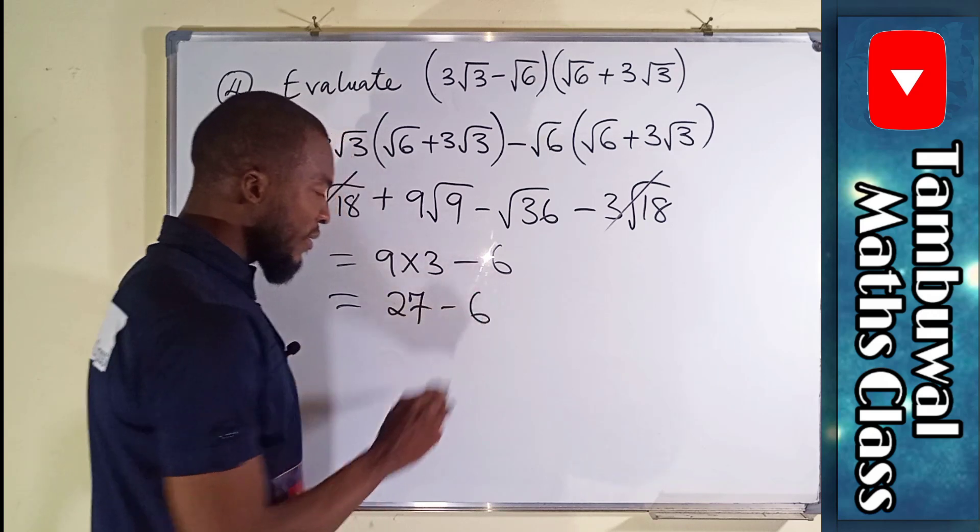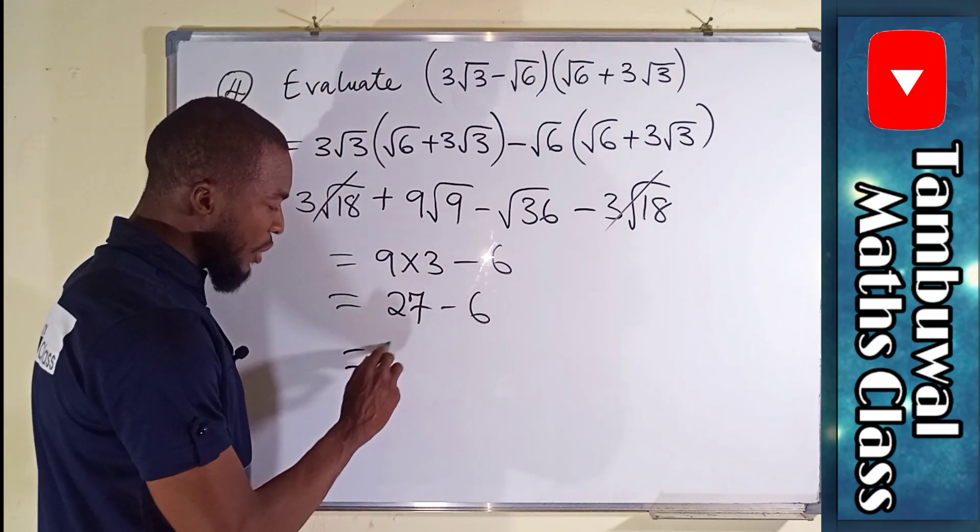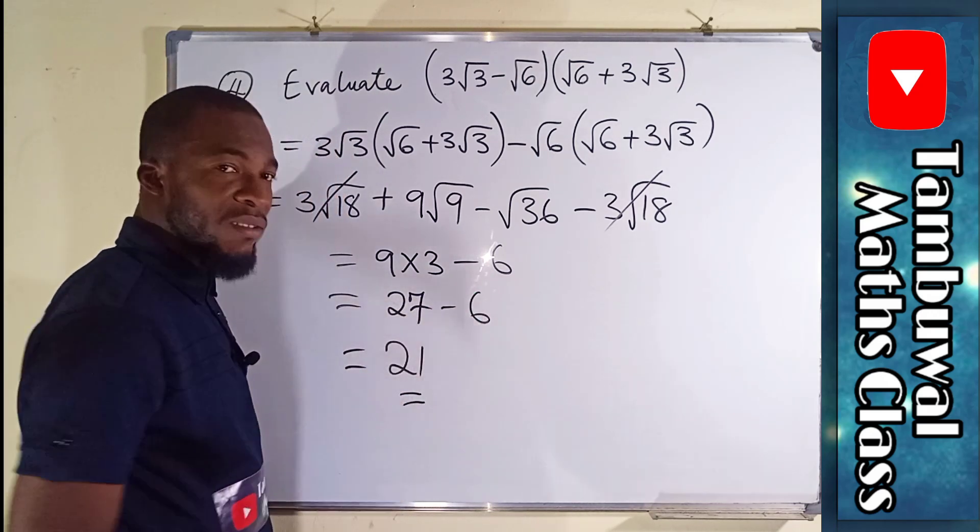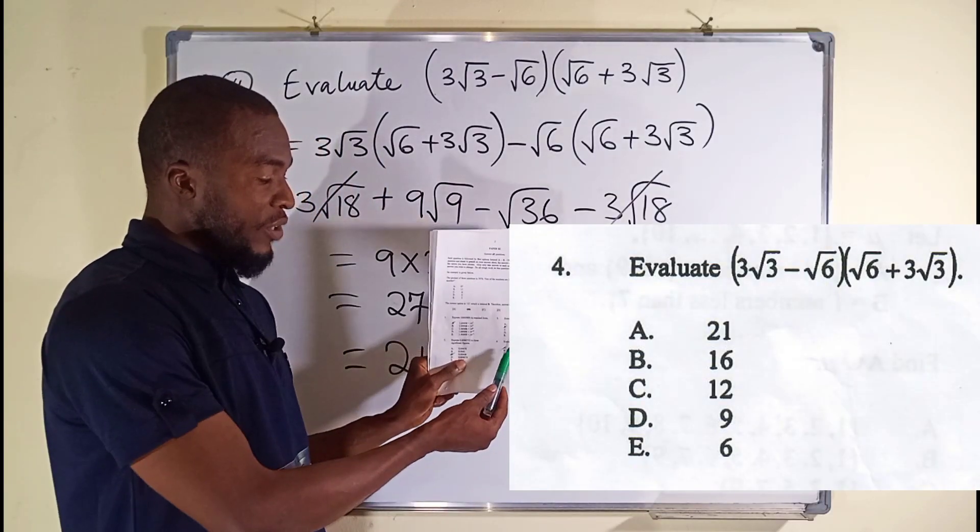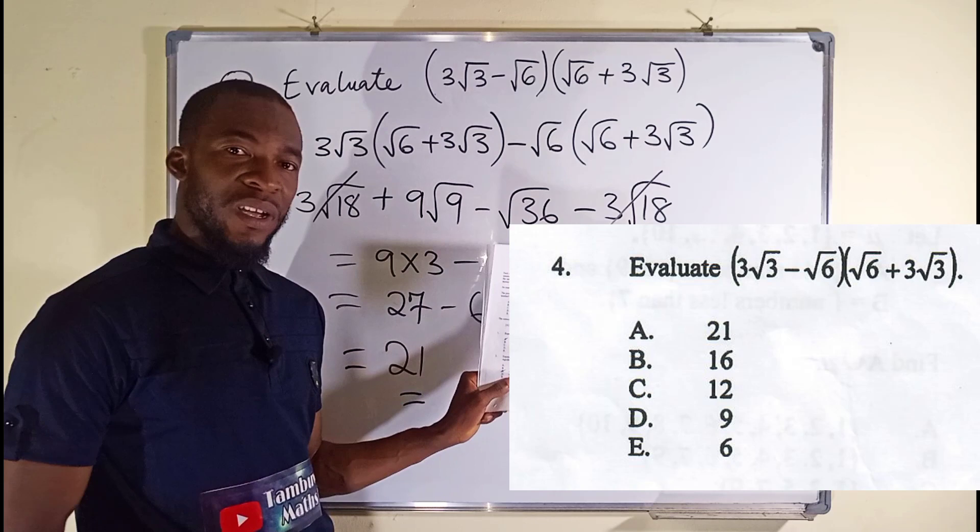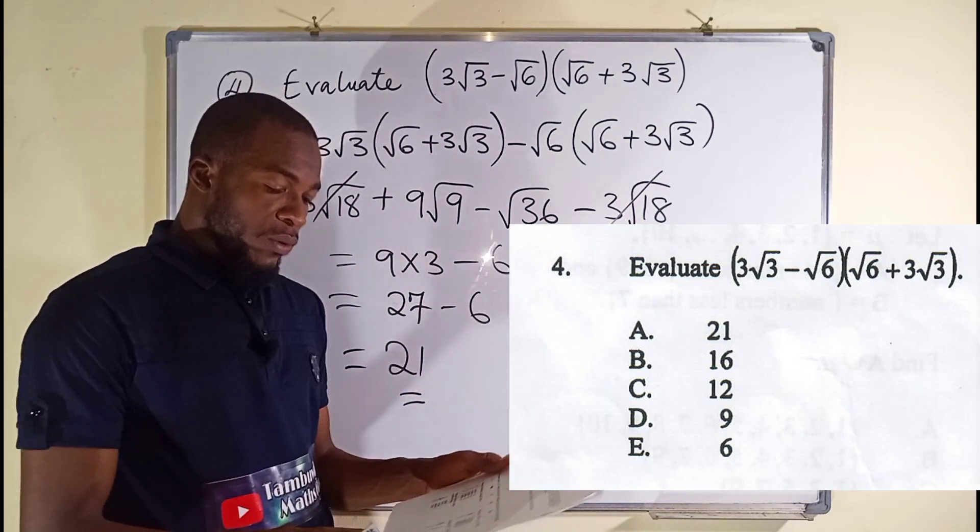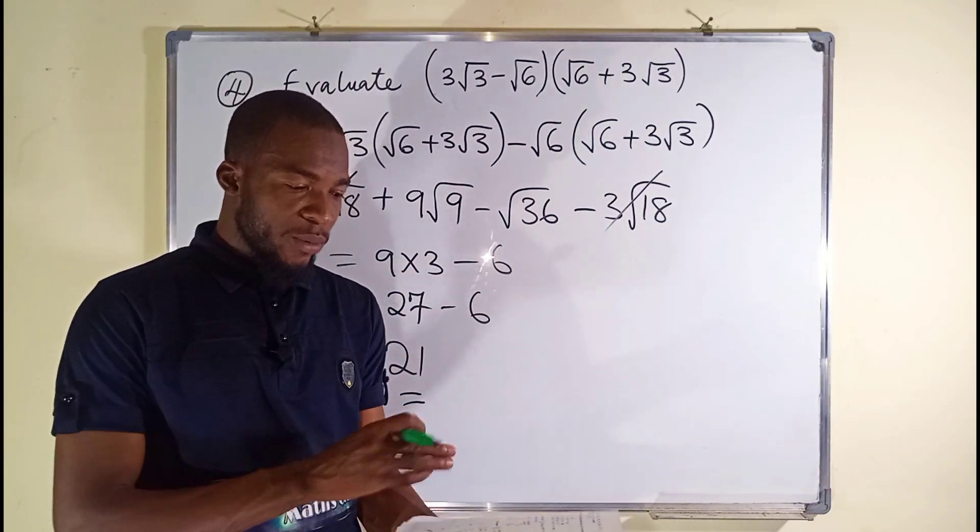27 minus 6 equals 21, which is our final answer. You can see from here we have option A, which is the right answer. So now let us move on to question number five.